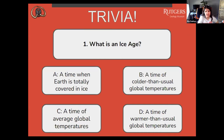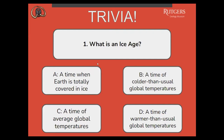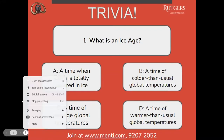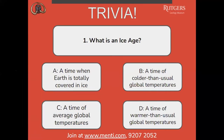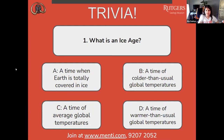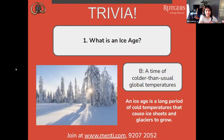A, a time when Earth is totally covered in ice. B, a time of colder than usual global temperatures. C, a time of average global temperatures. Or D, a time of warmer than usual global temperatures. We have a couple of answers coming in — people picking A and B. It looks like most people are picking A as their answer.